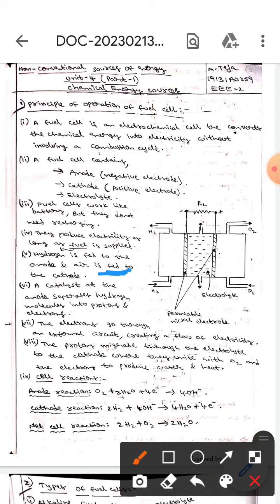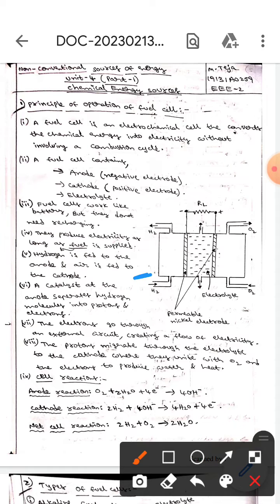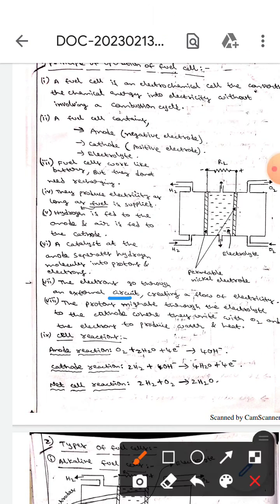Air, which means oxygen, is fed to the cathode. The catalyst at the anode separates hydrogen molecules into protons and electrons. These electrons go through an external circuit creating the flow of electricity.